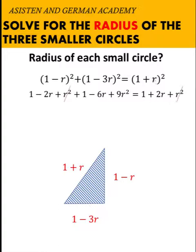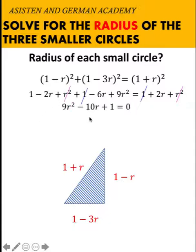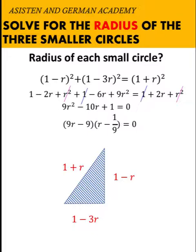Notice that r squared and r squared are the same, so we can cancel them from the equation. Also, positive 1 and positive 1 cancel out. Minus 2r minus 6r gives minus 8r. Then subtracting 2r from both sides gives minus 10r on the left. Writing in descending order, we have 9r squared minus 10r, and copying the constant 1, we get zero on the right.